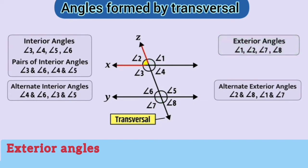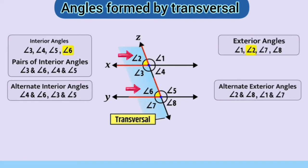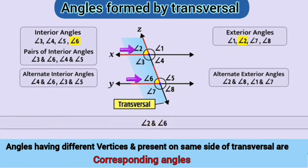Here, angle 2 and angle 6 have different vertices and both are present on the same side of the transversal. While angle 2 is an exterior angle and angle 6 is an interior angle — that is, they are in corresponding positions. Such angles are called corresponding angles.